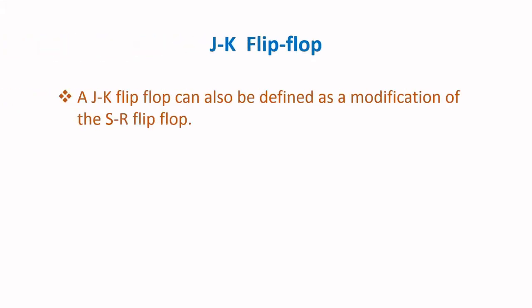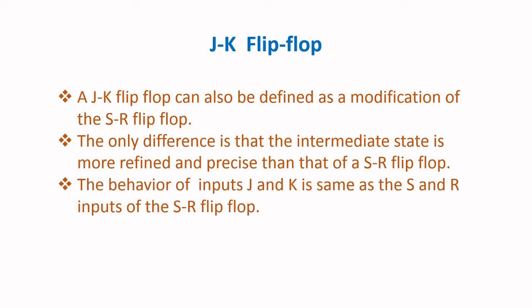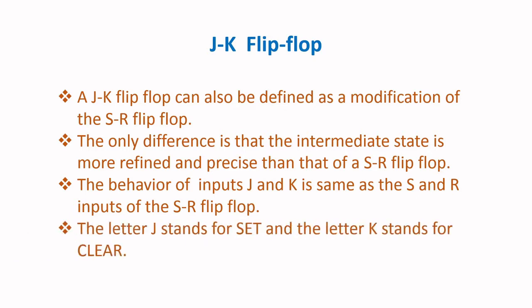A JK flip-flop can also be defined as a modification of the SR flip-flop. The only difference is that the intermediate state is more refined and precise than that of an SR flip-flop. The behavior of inputs J and K is the same as the S and R inputs of the SR flip-flop. The letter J stands for set and the letter K stands for clear.